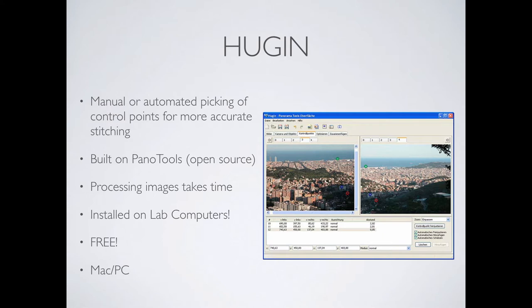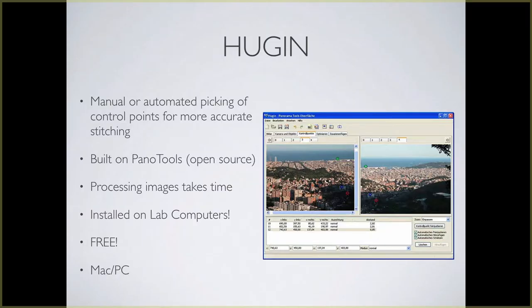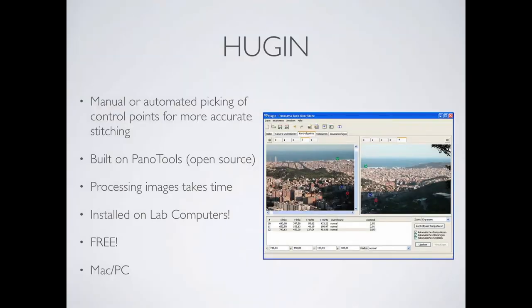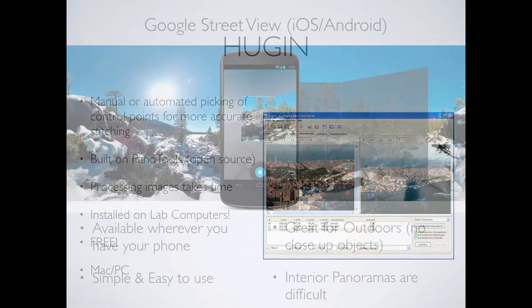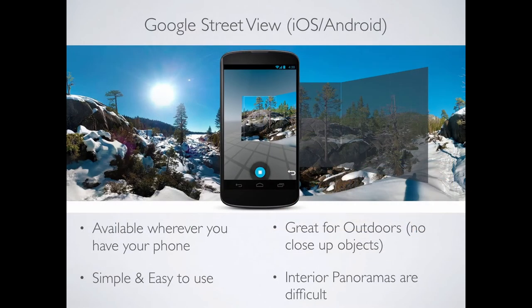Essentially, what these programs allow you to do is when you stitch images together, you can pick control points. In this example, I could say that green point in this image is the same as that green point in that image, and it will warp and bend the pictures to match up together. It's a very carefully controlled way of stitching panoramas together and gets really accurate, beautiful results.